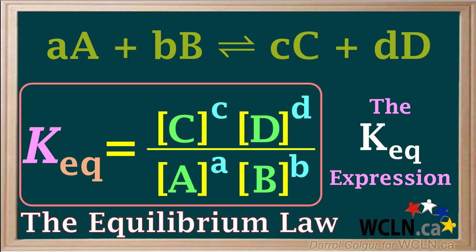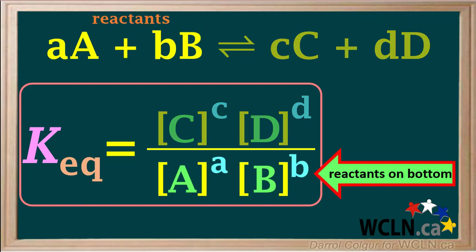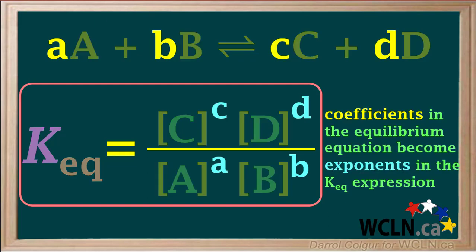What we've just gone over is known as the equilibrium law. It's important to remember that in the Keq expression, the products are always on top, or in the numerator, while the reactants are always on the bottom, or in the denominator. It's also important to remember that coefficients in the equilibrium equation become exponents in the Keq expression. If a substance has a coefficient of 1, the 1 is not shown in the equilibrium equation, and the exponent 1 is not shown in the Keq expression.